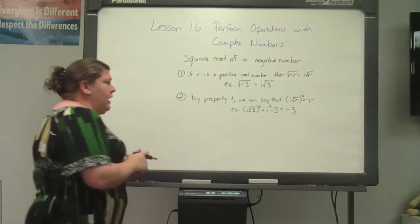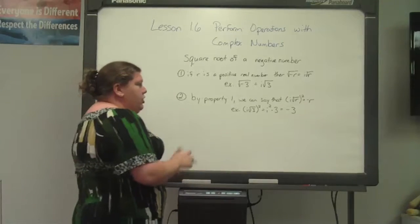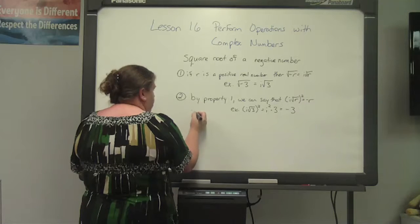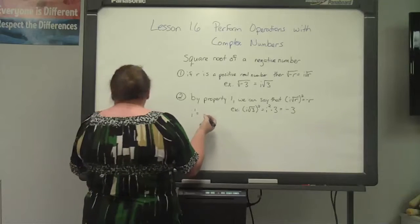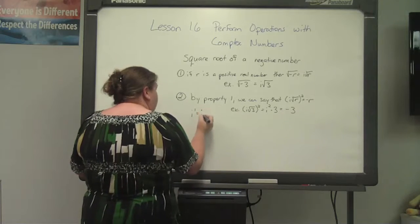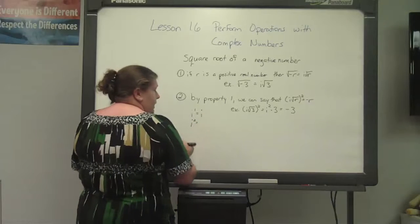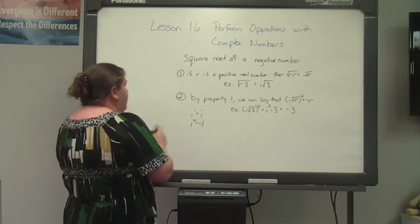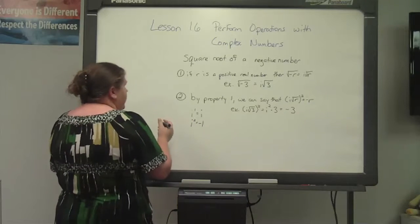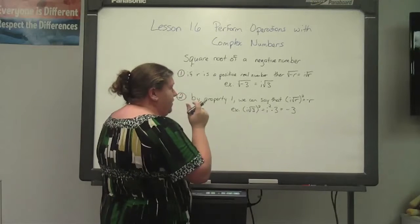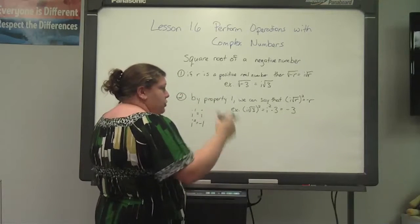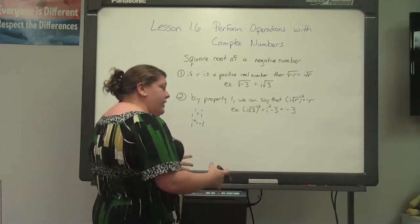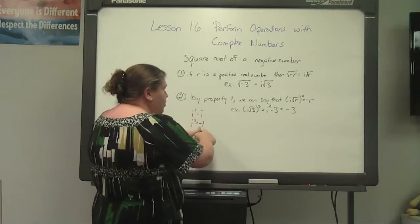One thing to remember: any time you see i to the first power, your answer is just i. But if you see i to the second power, it becomes negative one — because you have the square root of negative one times the square root of negative one, and the square root cancels out the square. Put these to memory because you will use negative one a lot.